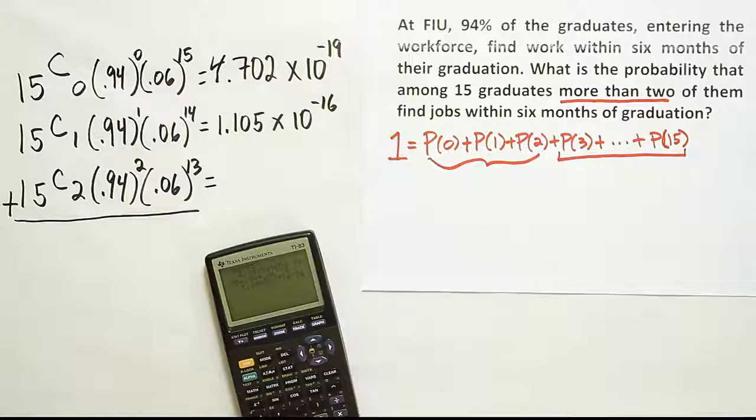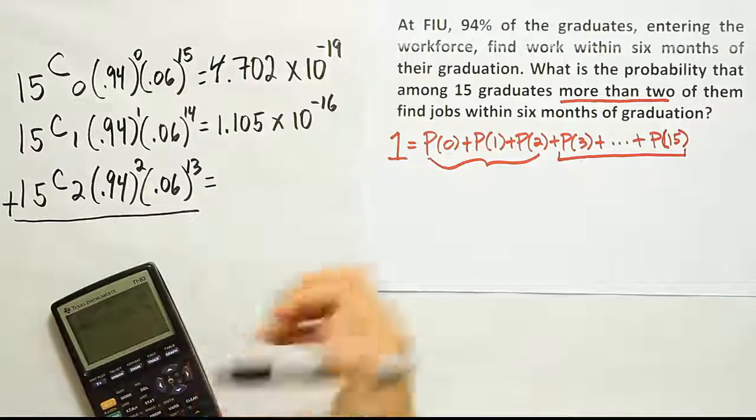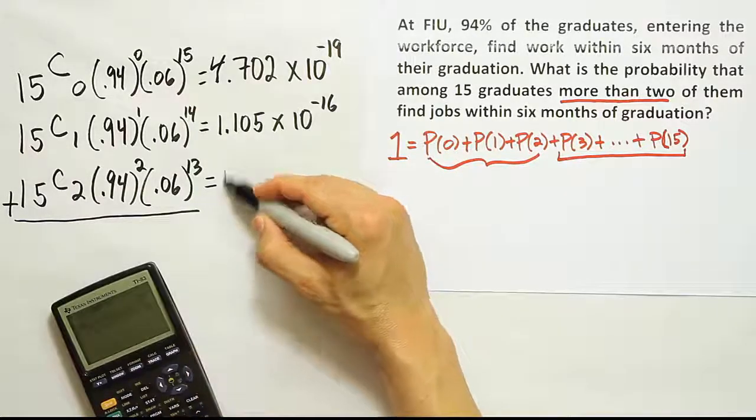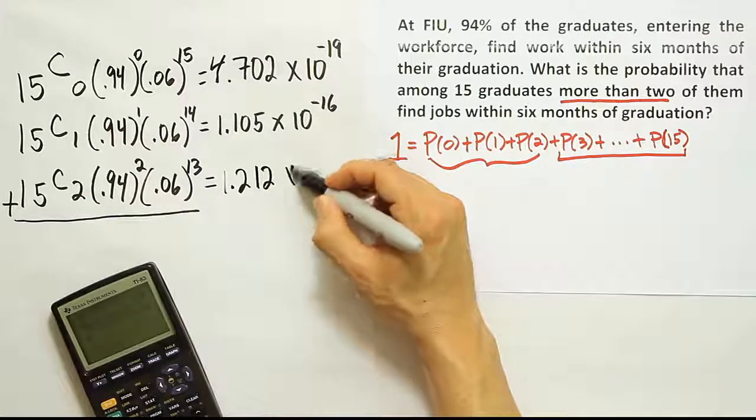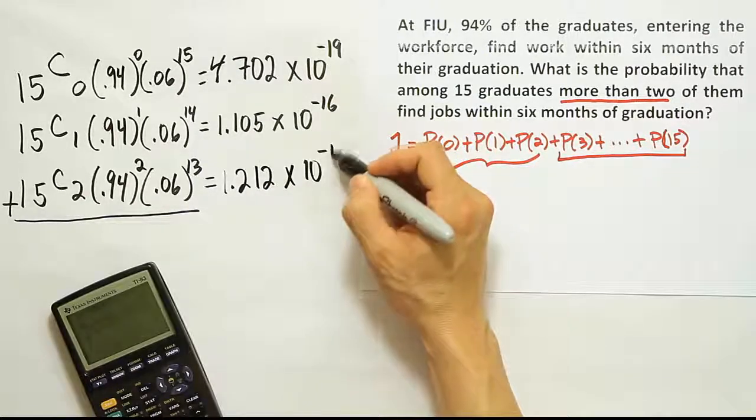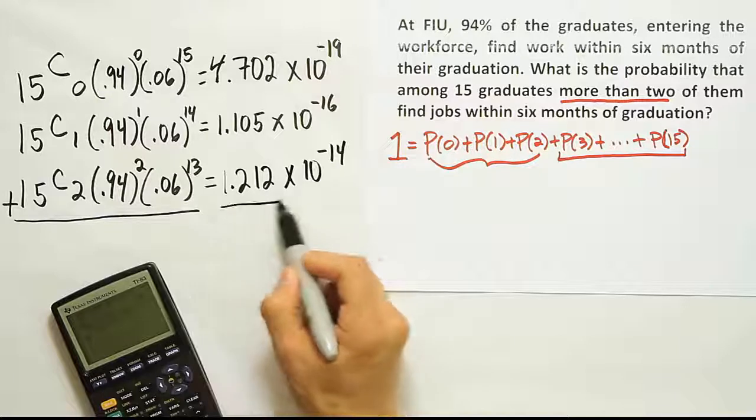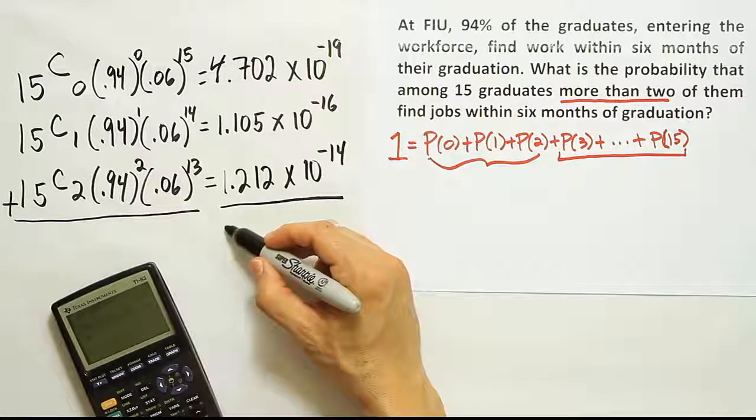Now we have this last one here. It will be 15 choose 2. So that's 15 choose 2, that's 105. And that will be times 0.94 to the second power times 0.06 to the 13th power. And we get another number that's, again, almost zero. It's 1.212 times 10 to the minus 14th. So again, adding all these together, we're basically going to get approximately zero.